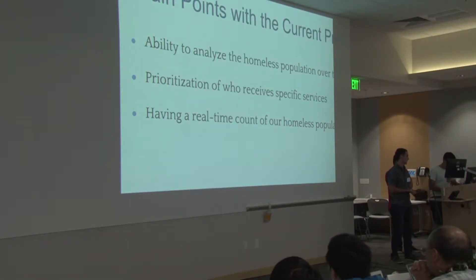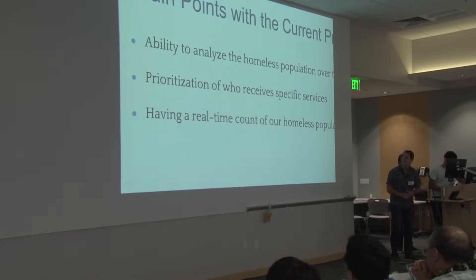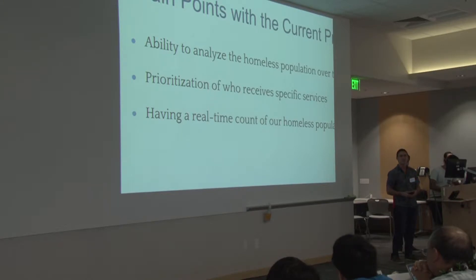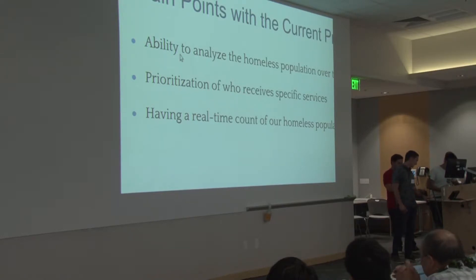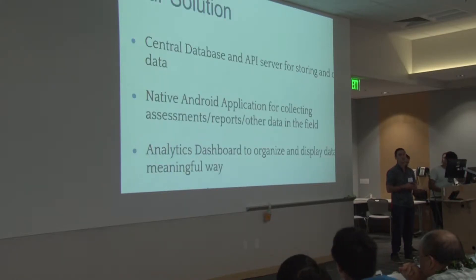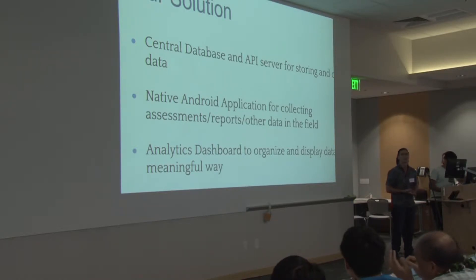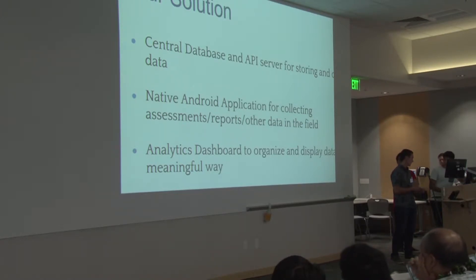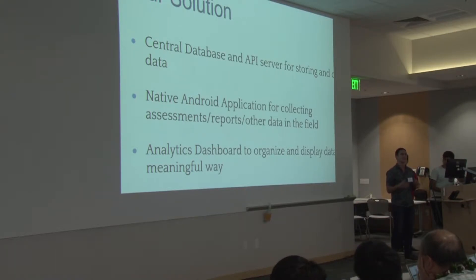Some of the pain points with the current process: there's really no ability to analyze the data that they take in. They fill out iSWIT app forms, but it's usually collected manually. There is a database in place, but you can't query the data or make any sense of it. Our solution would be to build a central database and API server that allows us to store and query this data collected out in the field, a native Android application for collecting assessments, reports, and other data either in office or out in the field, and an analytics dashboard to organize and display this data so we can make sense of it.